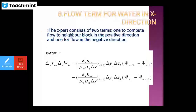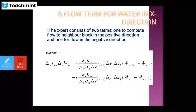The flow term in the x direction consists of two terms: one to compute the flow to the neighbor block in the positive direction, and the other for flow in the negative direction, shown as minus. For water you can see this equation: delta_x(T_wx · delta_x · phi_w) equals — you can see one flow in the negative direction in the bracket — same one done for the negative direction. The equation is clearly shown.